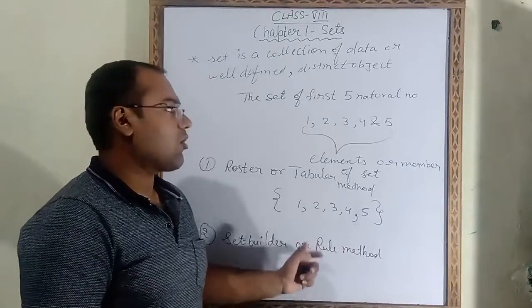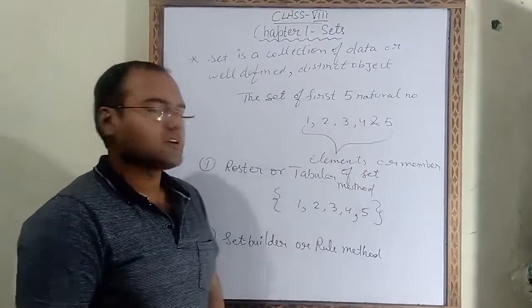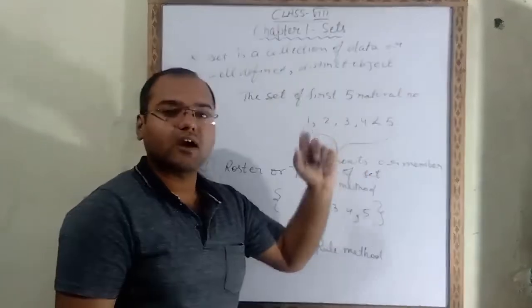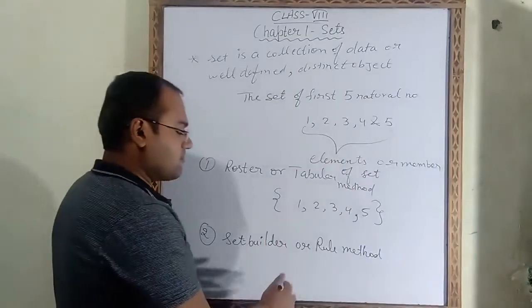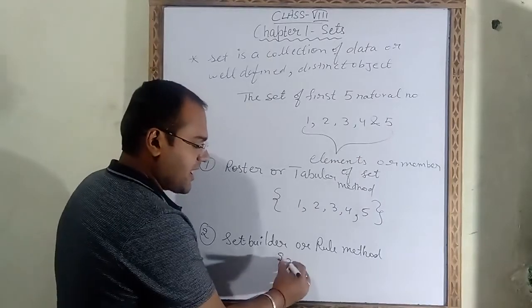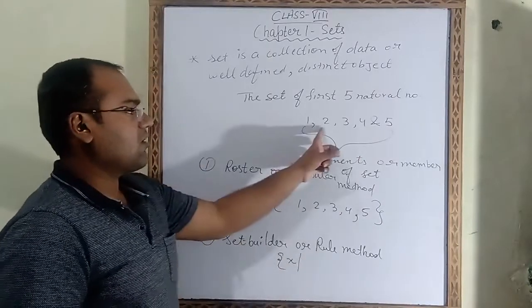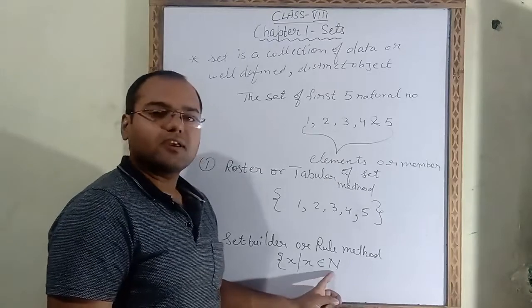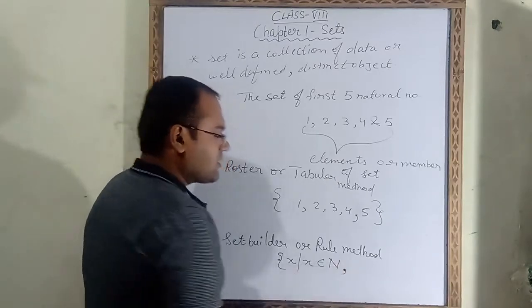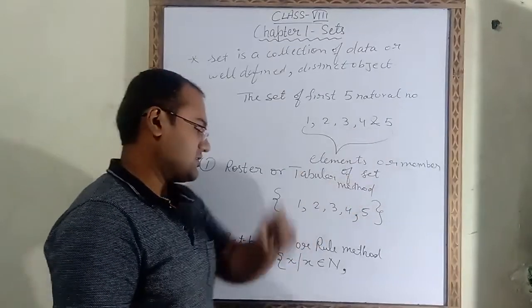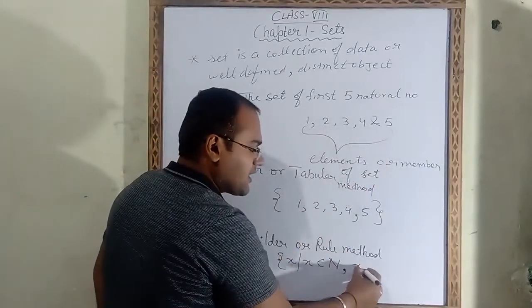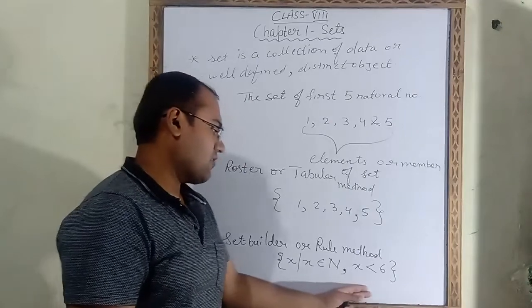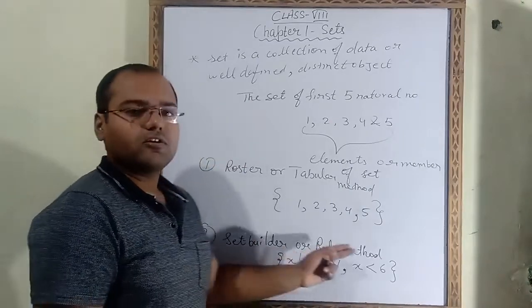In the set builder method we have to write the common property of all the elements. These elements are natural numbers. So the common property is that all five numbers are natural numbers. In brackets we write x such that these x values belong to natural number — we denote natural number with capital N. Then comma: all values of x are less than 6. Then we close the bracket. This method is called set builder or rule method.